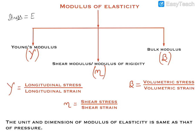We have already discussed that there are three types of stress and three types of strain. We can also say that on the basis of those types, there are three kinds of elastic modulus. The first elastic modulus is Young's modulus, and Young's modulus is the ratio of longitudinal stress to longitudinal strain.